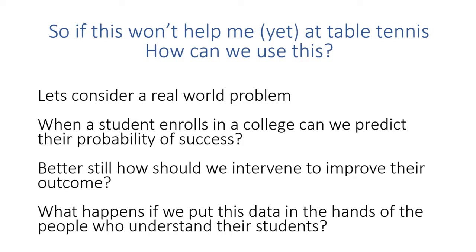Let's consider a really simple real-world problem. When a student enrols in a college, how do we predict their probability of success? We do exactly what I've just explained with the model — we collect data. We're already collecting lots and lots of data, but we take a look at the characteristics within that data and try to work out the probability of success. Better still, we should be able to use that data to intervene and improve their outcome. Those students with a low chance of success — what are the indications and what are the things we can do to help uplift their score and make them better?